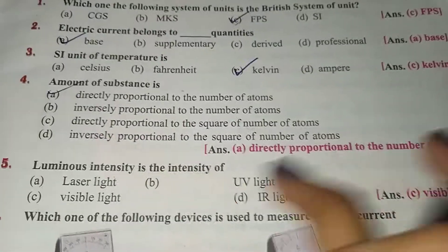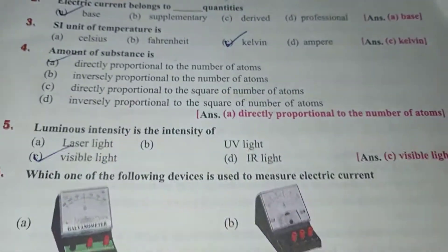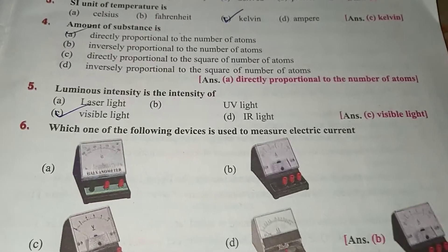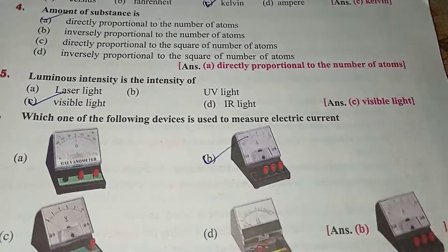Next. Luminous intensity is the intensity of visible light. Which one of the following devices used to measure electric current is ammeter.